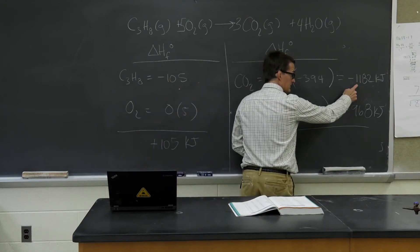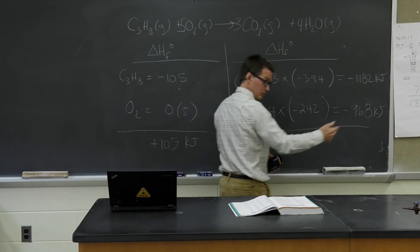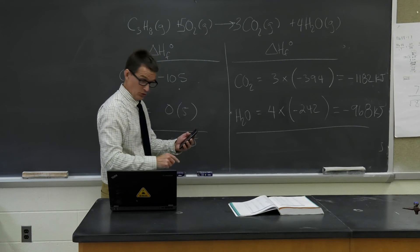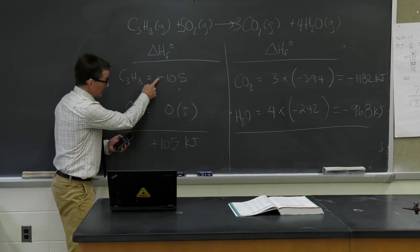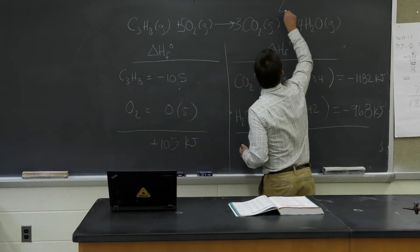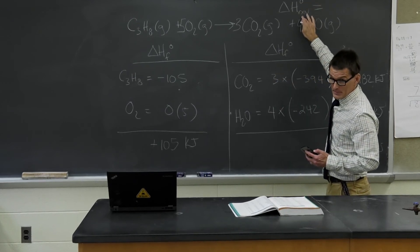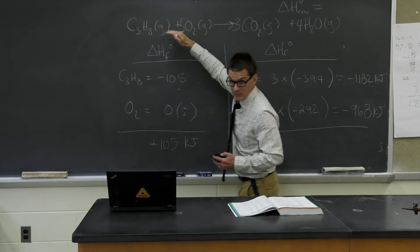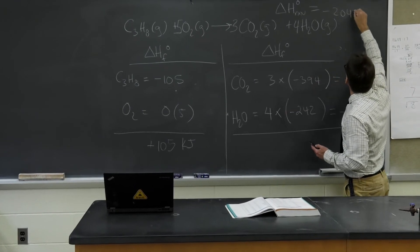So I take these values. I leave them negative — negative 968 and negative 1182. A negative plus a negative: 968 and 1182 gives a total of negative 2150. But I add positive 105, since I had to change that sign. So my overall enthalpy for this reaction, as written under standard conditions — though this is not an enthalpy of formation — is negative 2045 kilojoules.